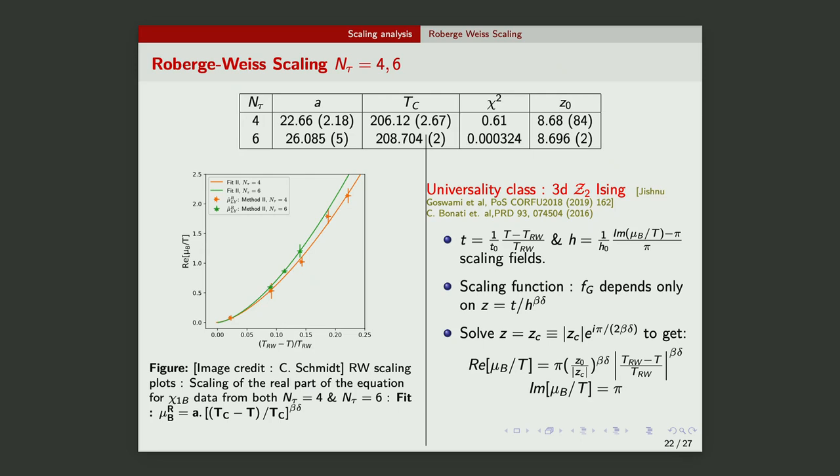Also, we get some estimates on the Roberge-Weiss transition. For n_tau=4, on an independent study, they estimated 201 MeV, so we are, at least it's the same order. I don't know the error bars on their number, but I think it's a good result.